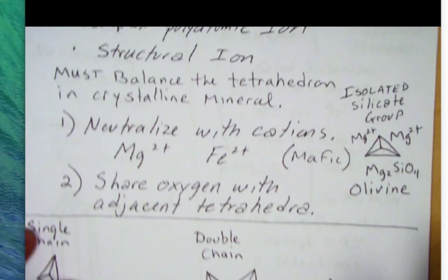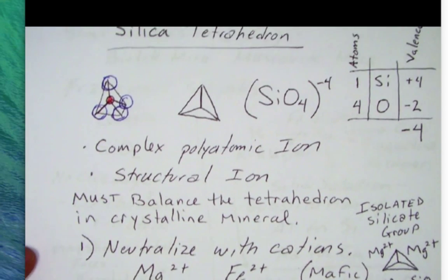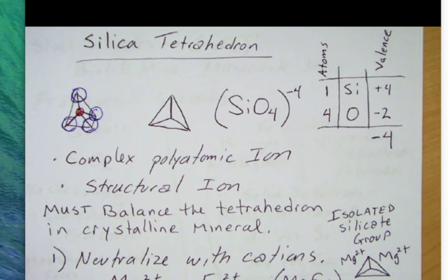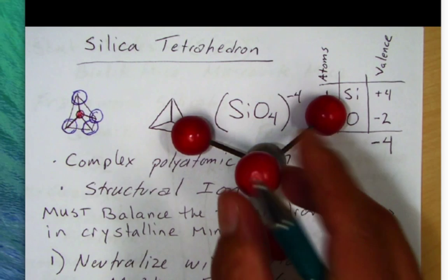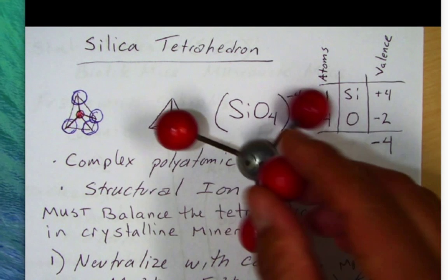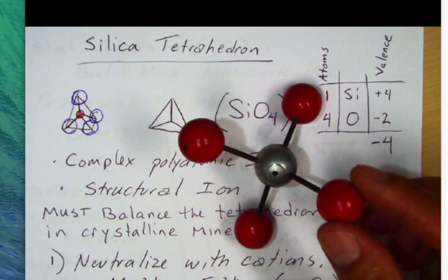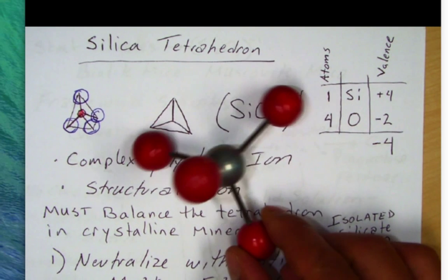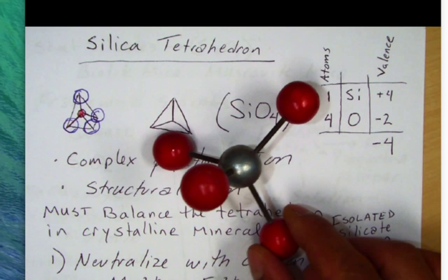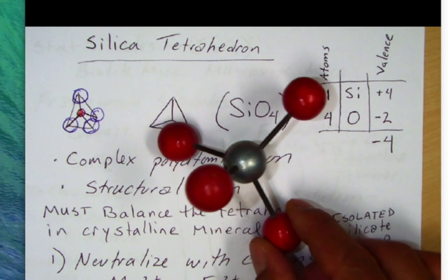Now let's look at the silica tetrahedron. You'll find that this tetrahedron is the basic structural molecule — or structural ion — for the tetrahedra. It's composed of one silicon and four oxygen. Here I have a little model of it, where my silicon is the silver central atom, surrounded by four oxygen on the corners. I drew a little cartoon of it over here, and usually we draw these in pyramidal forms.